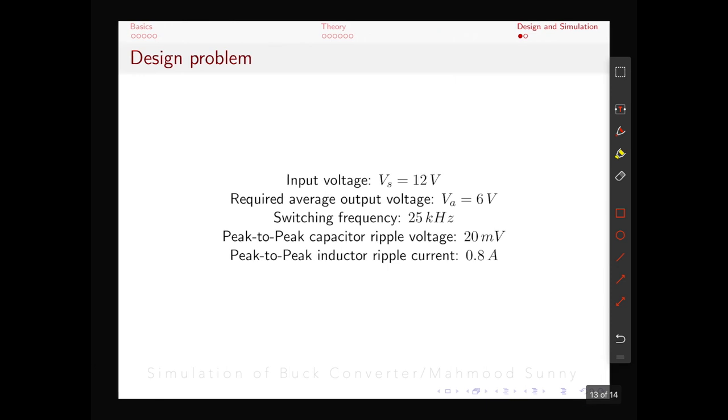We are taking the input voltage as 12 volt and we would like to have our output voltage on average to be 6 volt. We can keep the switching frequency at 25 kilohertz. But if we are using IGBT or MOSFET then the switching frequency can be extended further. And according to our specification we want to keep 20 millivolt for our capacitor ripple voltage peak to peak. And for our peak to peak inductor ripple current we want to keep it as 0.8 ampere.